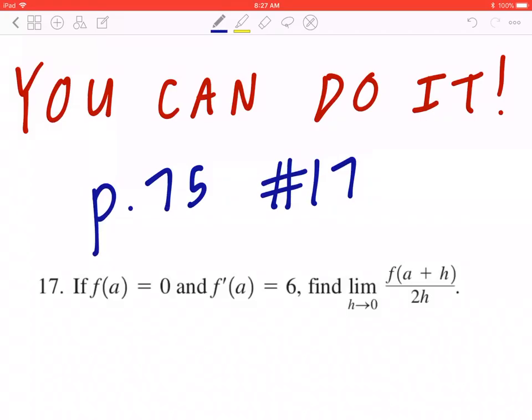Hi everyone, let's take a look at number 17 on page 75. If f of a equals zero and f prime of a equals six, find the limit as h approaches zero of f of a plus h divided by two h.